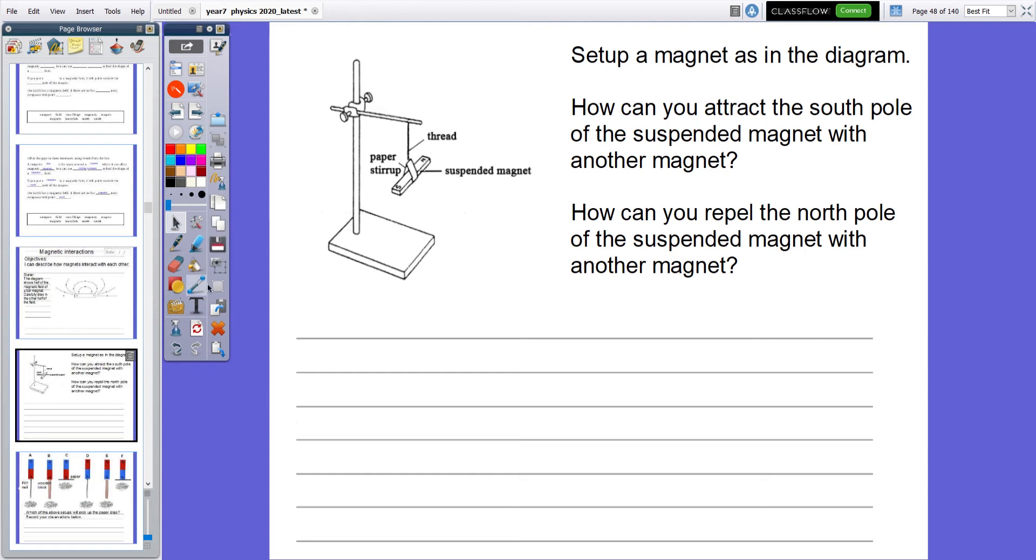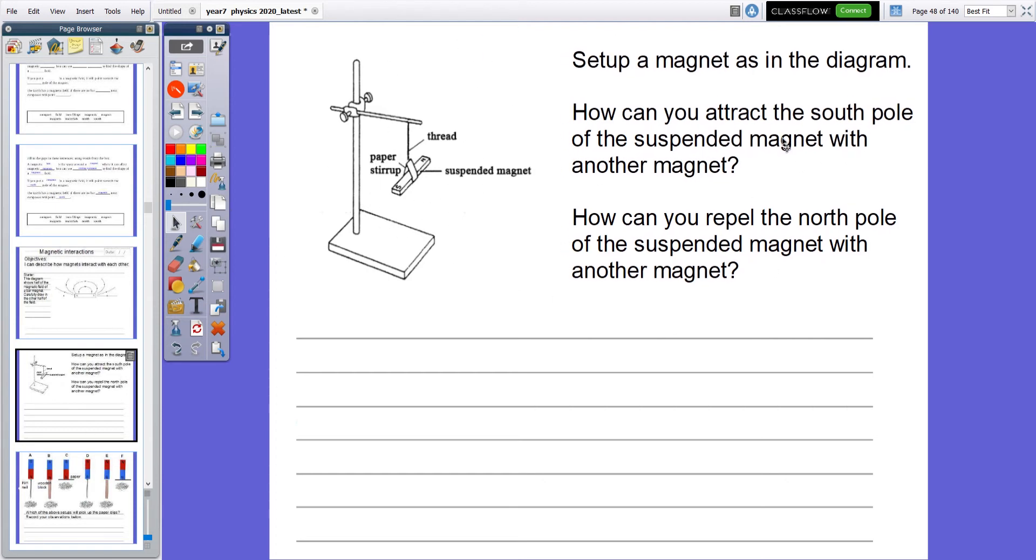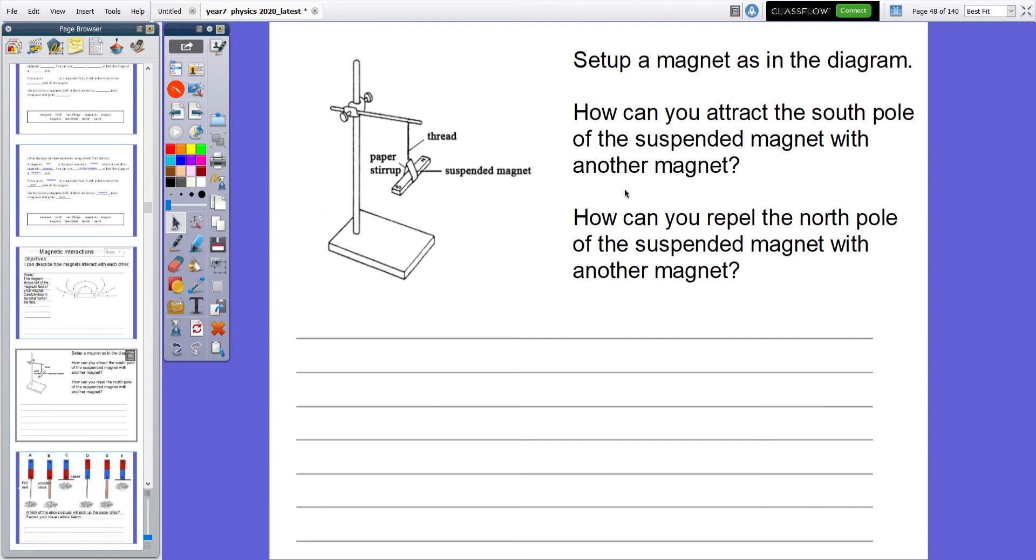In class, if you set up a magnet, how can you attract the south pole of the magnet with another magnet? Well, to attract the south pole, you would need to bring in a north pole. Because south and north will attract. How can you repel the north pole on a suspended magnet with another magnet? Well, to repel the north, you need to bring in another north. And this experiment is just for you to be able to see that two norths will repel, two souths will repel. And a north and a south will always attract.